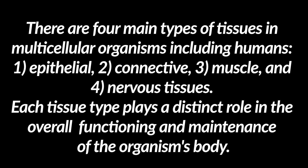The 4 main tissue types are: 1. epithelial, 2. connective, 3. muscle, and 4. nervous tissues. Each tissue type plays a distinct role in the overall functioning and maintenance of the organism's body.